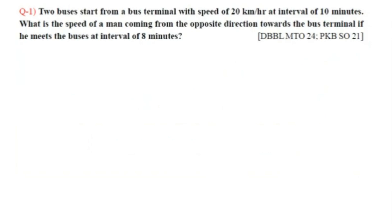Question number one: Two buses start from a bus terminal with a speed of 20 kilometers per hour at intervals of 10 minutes. What is the speed of a man coming from the opposite direction towards the bus terminal if he meets the buses at intervals of 8 minutes?